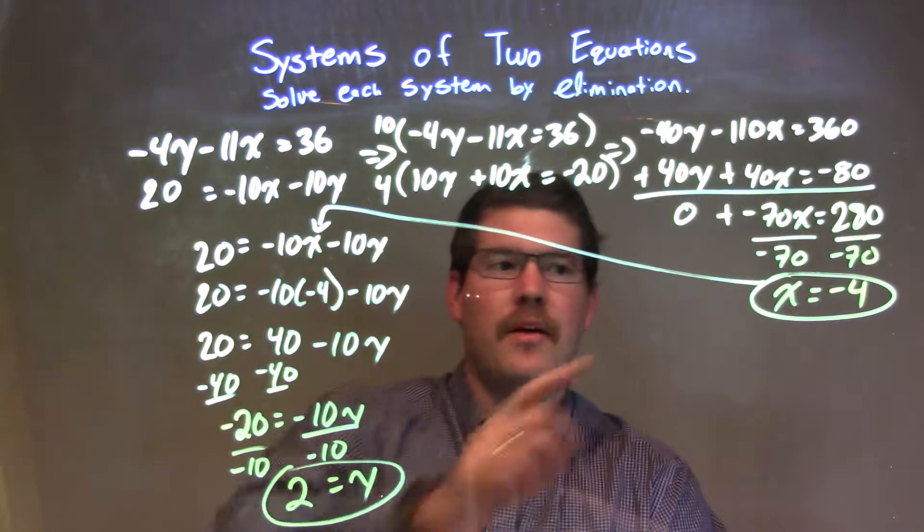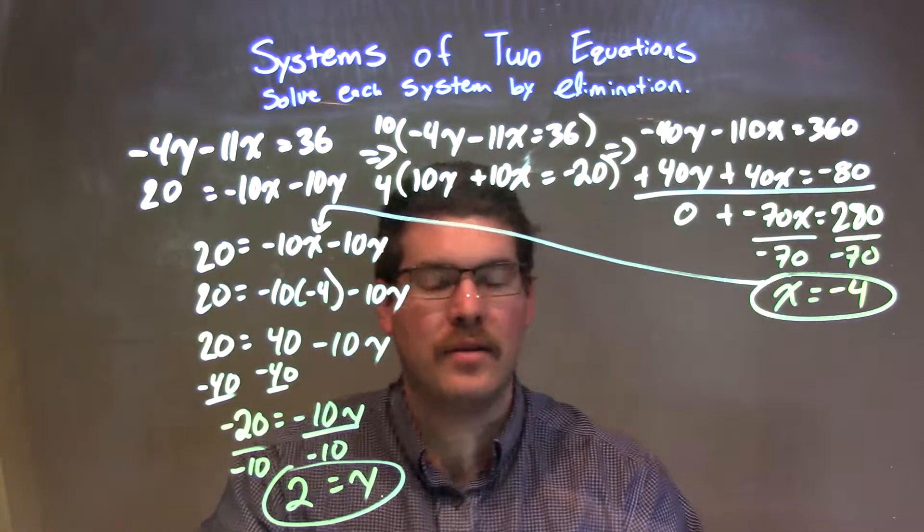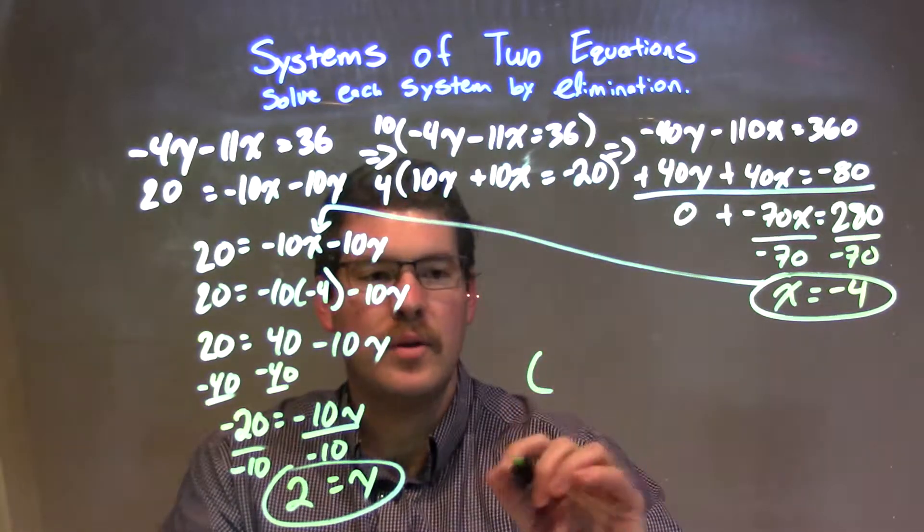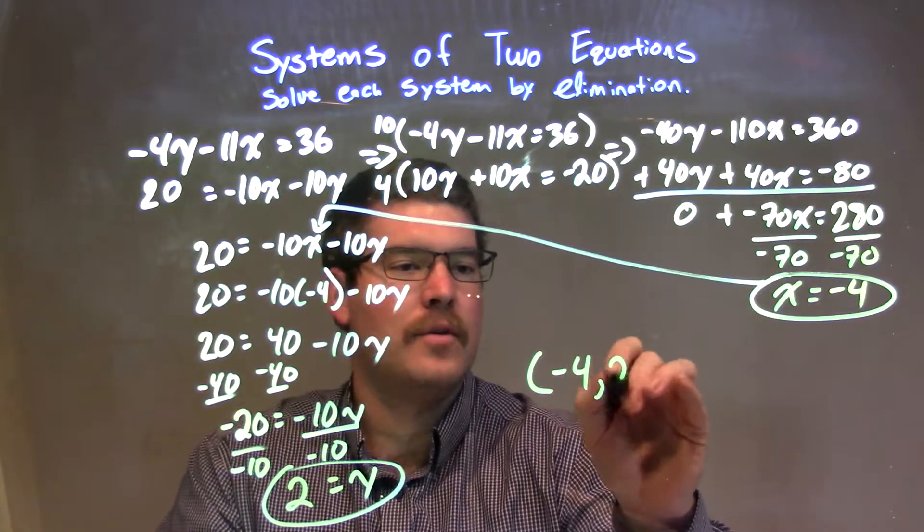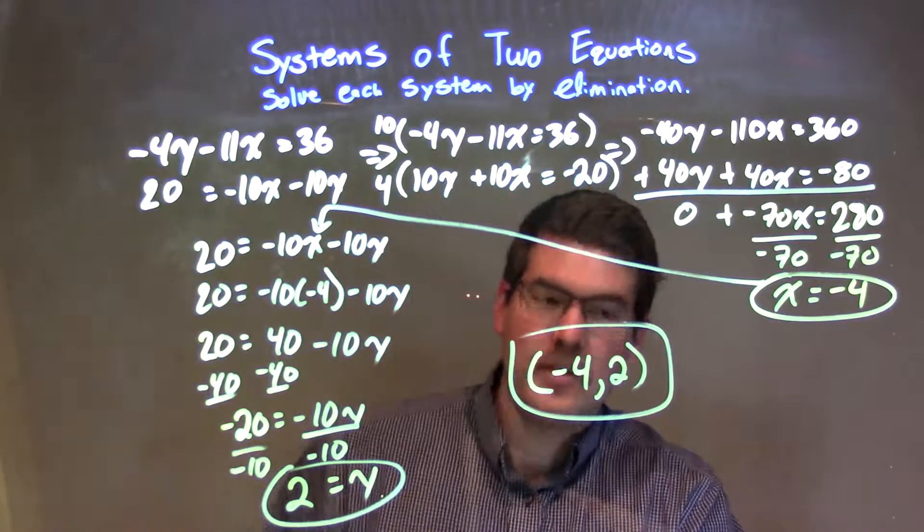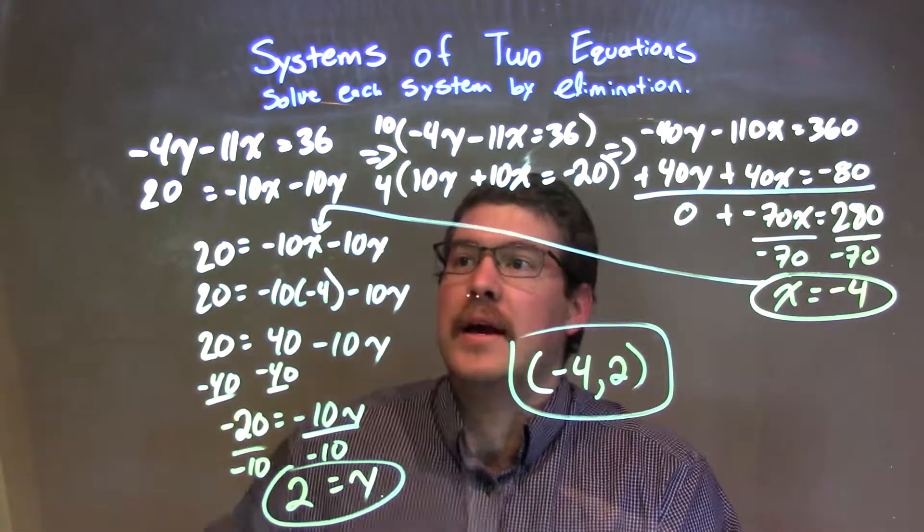So now we have x is negative 4, y is positive 2. I can write that as a coordinate point as negative 4 comma 2, and that would be my final answer. Let's recap.